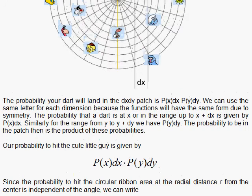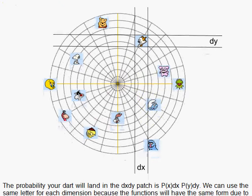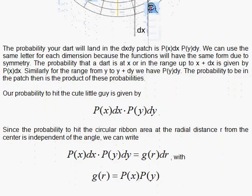Notice that the probability is a function of the distance from the center. If you think in terms of polar coordinates, it doesn't depend on the angle theta. The probability of hitting anything around this circular region at the same distance has to be the same.